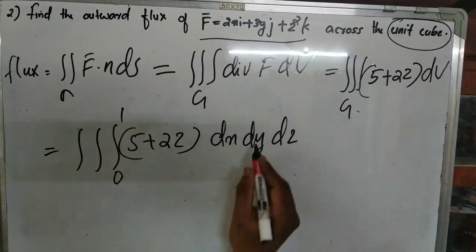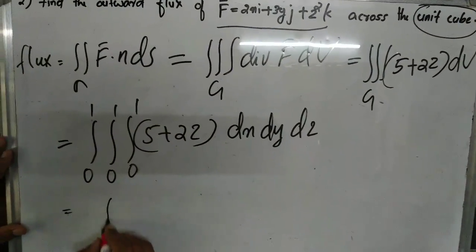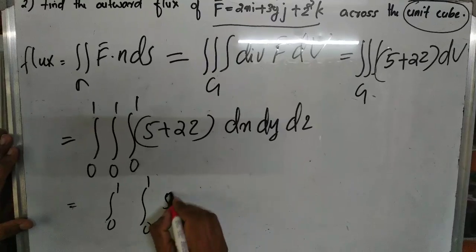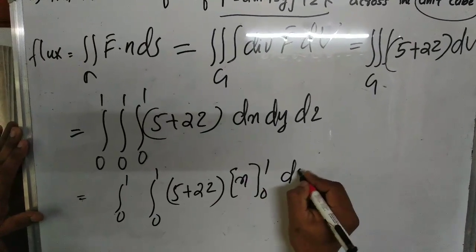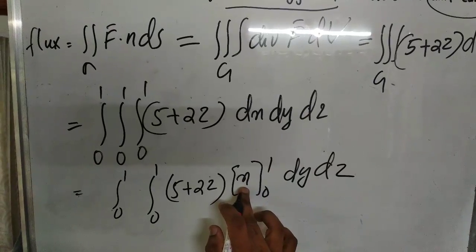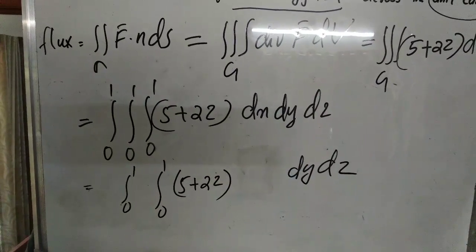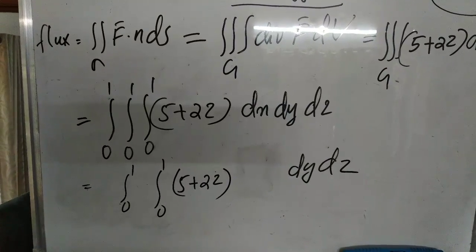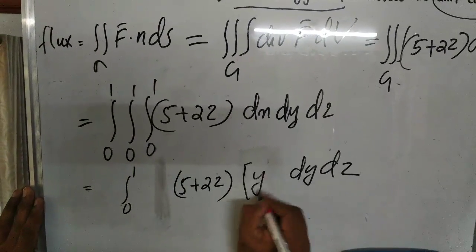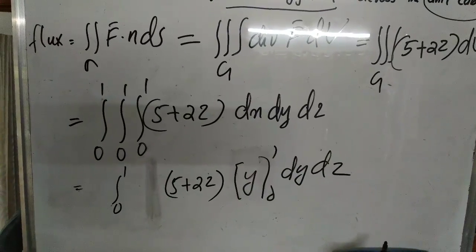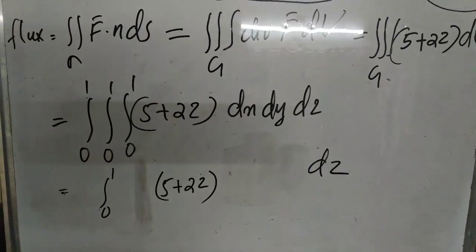So the integral becomes: integral from 0 to 1 in z, integral from 0 to 1 in y, integral from 0 to 1 in x of (5 + 2z) dx dy dz. Integrating with respect to x from 0 to 1 gives 1. Then integrating with respect to y from 0 to 1 also gives 1. So y evaluated from 0 to 1 equals 1.